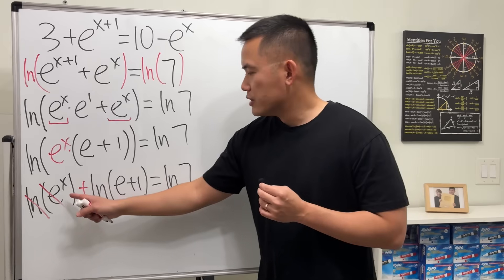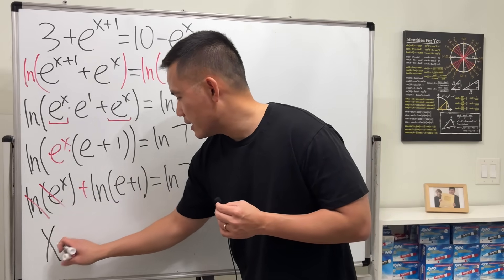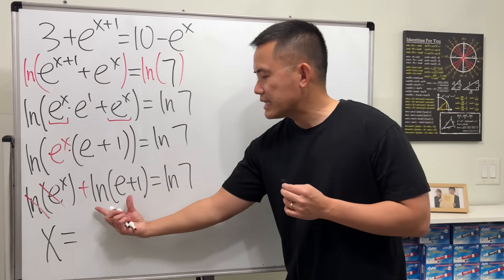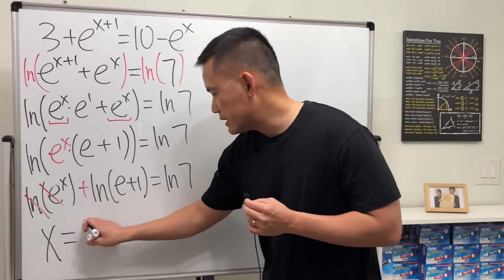We can actually cancel the ln and e together. That's very nice. And in fact, this is just a number, which we can compute on our calculator. So this right here is x, and that's equal to, let's subtract this number to both sides.